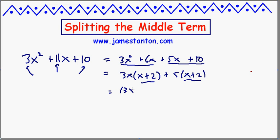Wow, common factor of x plus 2, and we get 3x plus 5 times x plus 2. Magic.